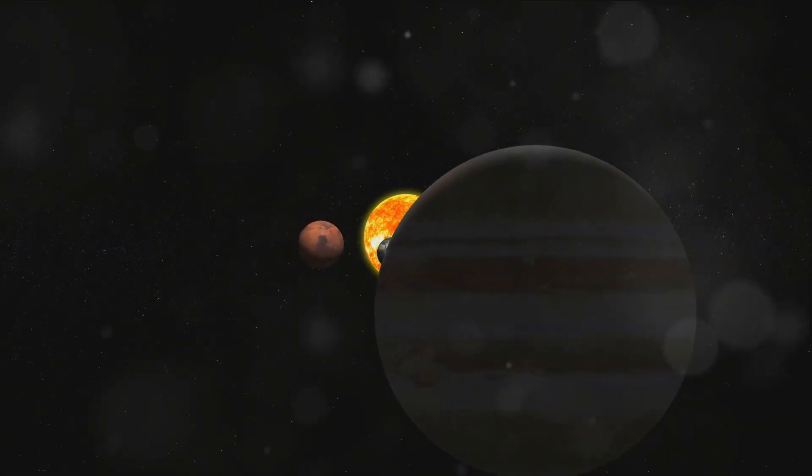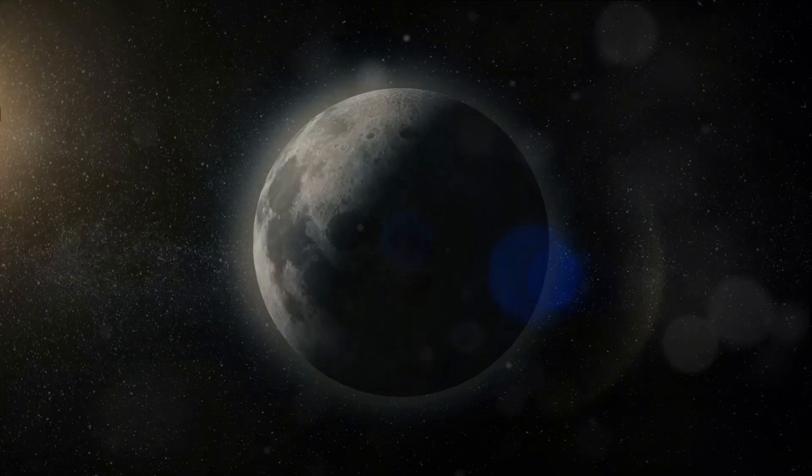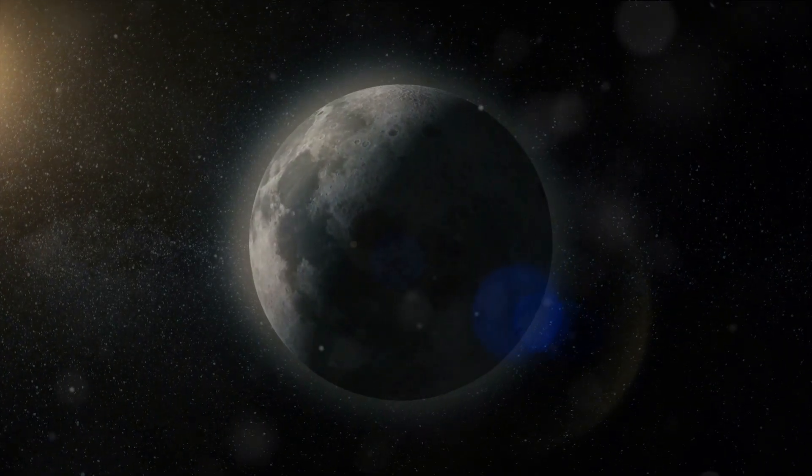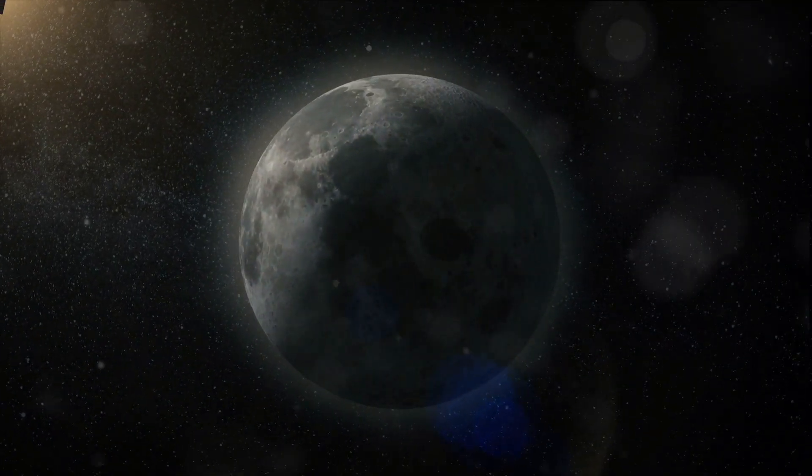Our home planet Earth is the third rock from the sun, a blue oasis teeming with life. It's the gravitational pull between Earth and the moon, our planet's only natural satellite, that gives us our ocean tides.